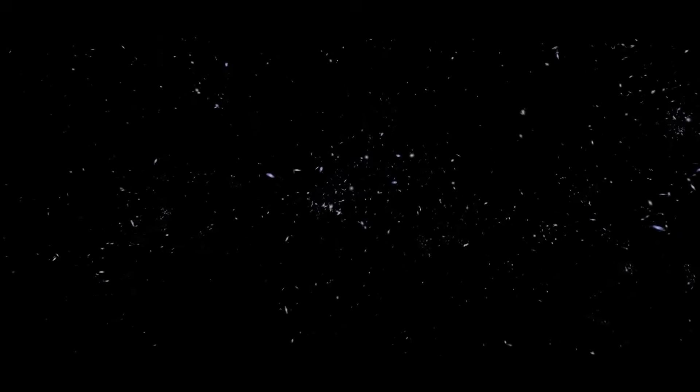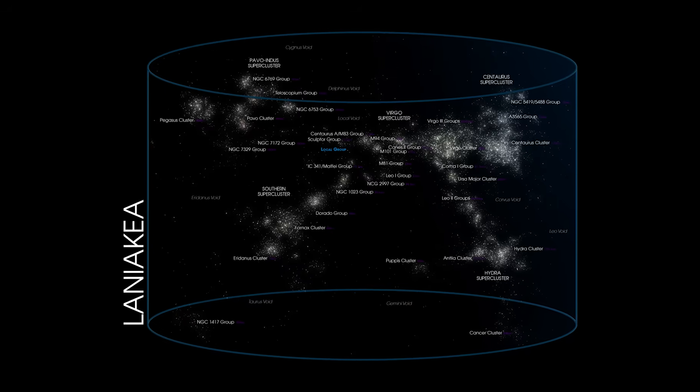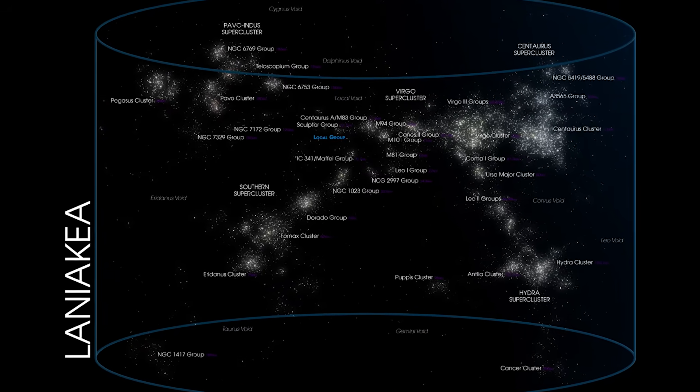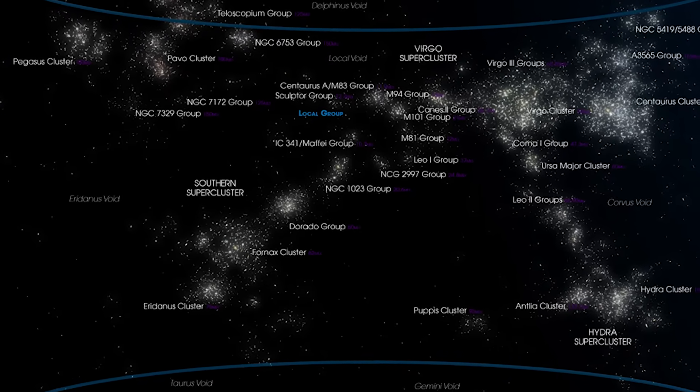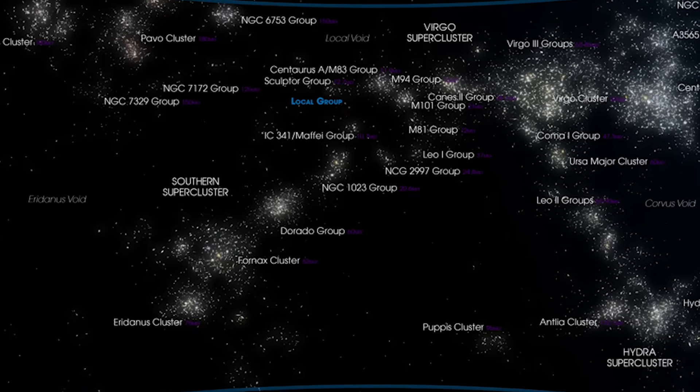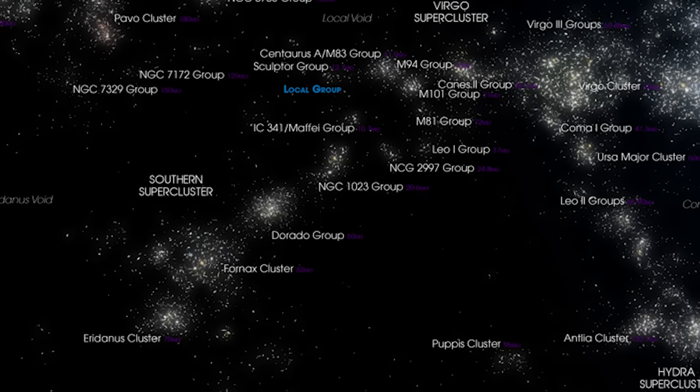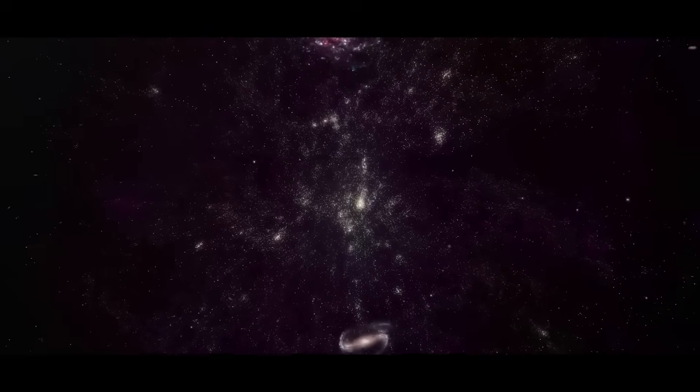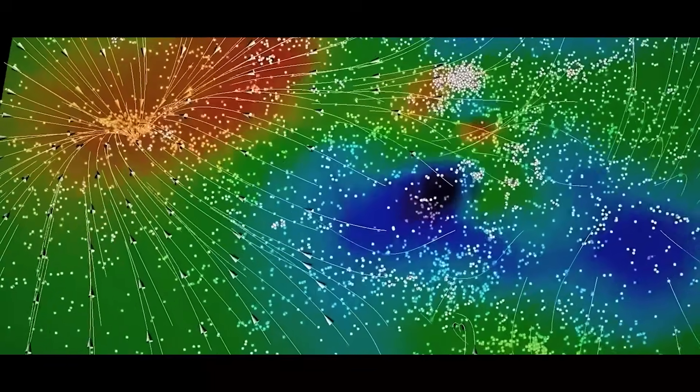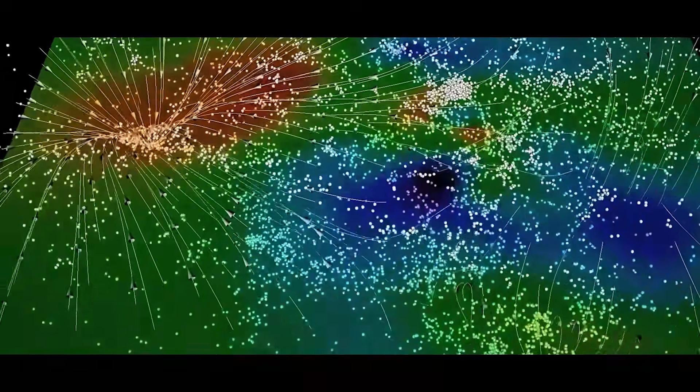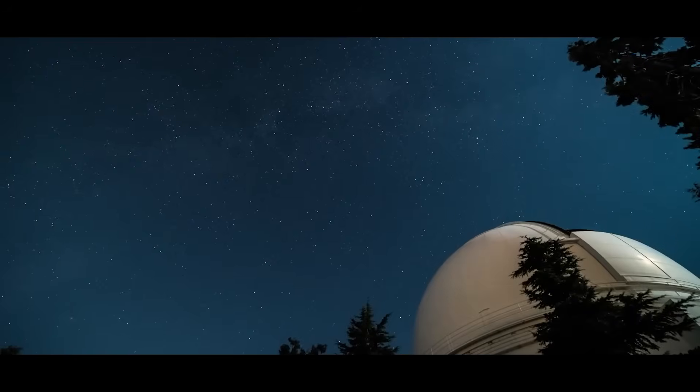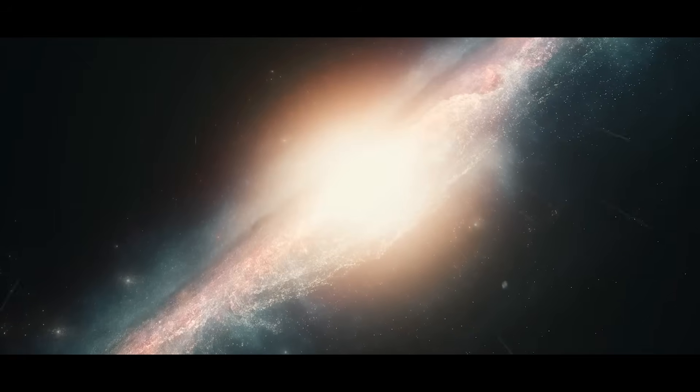As we zoom out even further, we encounter a colossal supercluster of galaxies known as Laniakea, which is approximately 520 million light years in size. This structure includes several galaxy superclusters, including the Virgo supercluster and the Great Attractor. The total mass of Laniakea is estimated to be around 100 quadrillion solar masses. The Great Attractor, located about 250 million light years from Earth, acts as a gravitational center for all nearby objects. It cannot be directly observed from Earth, as the Milky Way obstructs our view. This is why the nature of the Great Attractor remains an unsolved mystery today.